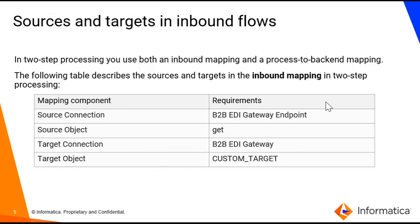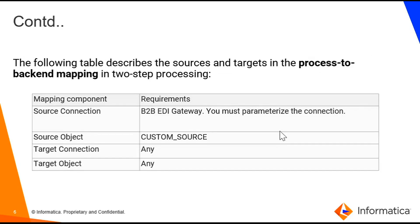Let us look at the sources and targets of inbound flows. In two-step processing we use both an inbound mapping and a process-to-backend mapping. First the inbound mapping will be executed, then the process-to-backend mapping will be executed. The file will be either FTP'd or pulled from a local folder. For the first step inbound mapping, here are the source and target objects and connections required. For the process-to-backend mapping, we are using B2B Gateway and custom source.